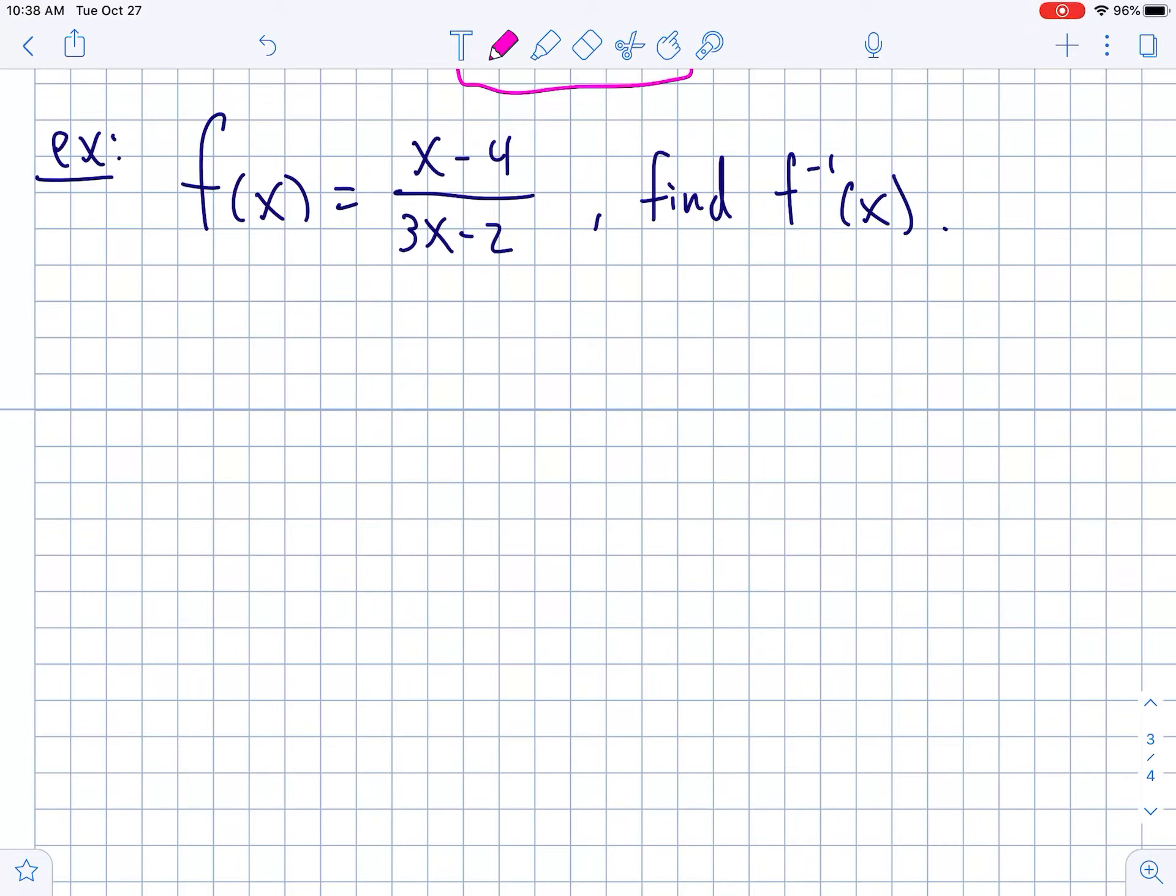Last problem. f of x equals x minus 4 over 3x minus 2. Find the inverse. OMG, the inverse. That was so long ago. You guys, with inverses, you just swap the x and the y. So, we get x is equal to y minus 4 over 3y minus 2, and we have to try to get y by itself. First thing I am going to do is multiply both sides by this denominator to get rid of the fractions.